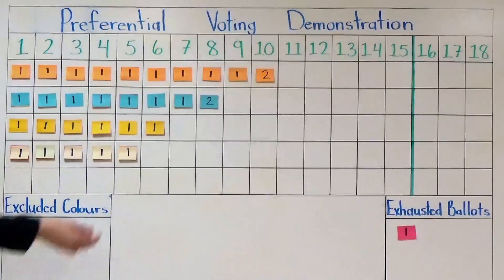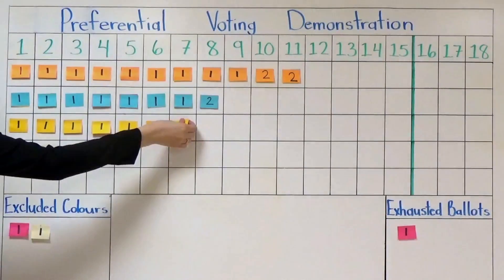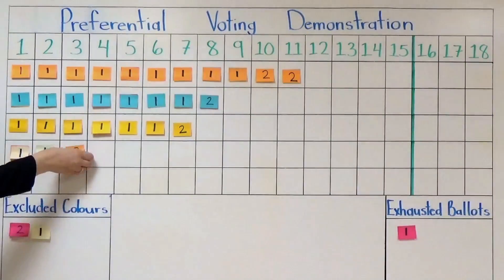This time, the color white is being excluded, and having their choices redistributed because they have the least amount of votes.